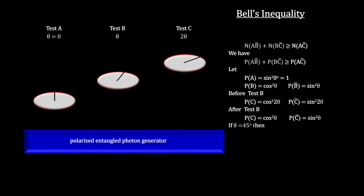For an angle of 45 degrees, we get 0.75 is greater than or equal to 1. Clearly not true. This is called a Bell violation. It tells us that the assumption that states are determined by hidden variables must be false.